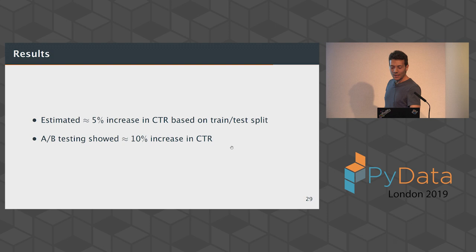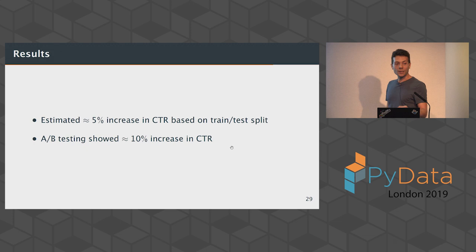A more recent project used something very similar for news recommendation, which you can decompose similarly — do they like sports news and all sorts of things. We're seeing similar results with that as well.